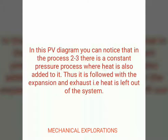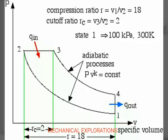Now we are going to see the PV diagram. Notice the process 2 to 3 — that is the constant pressure process where heat is added. It is followed by expansion and exhaust. In the diagrammatical representation, process 2 to 3 is where heat Q-in is added at constant pressure where combustion takes place. It has a cut-off ratio, and hence it is termed as a diesel cycle.